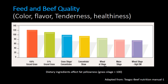There is an interesting effect of feed on beef quality in terms of color, flavor, tenderness, and healthiness. This chart shows the effect of different feed ingredients on fat yellowness, with grass silage considered as 100%. By changing the feed type, the yellowness of beef can be altered. Cattle fed a high dry matter wheat silage ration had the whitest carcass fat, while cattle finished on grass had the most yellow fat. To meet a white fat specification, cattle must not consume green forage in the finishing period.